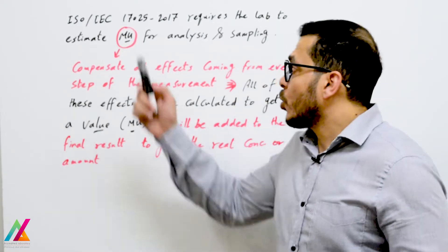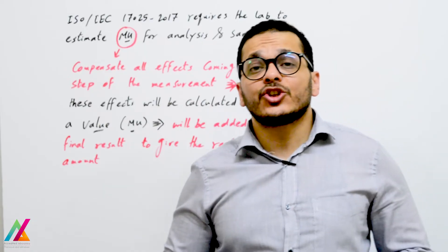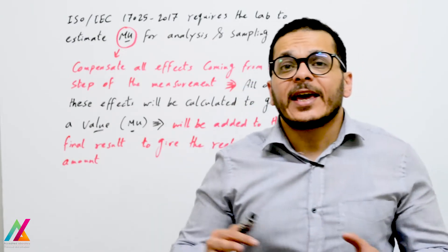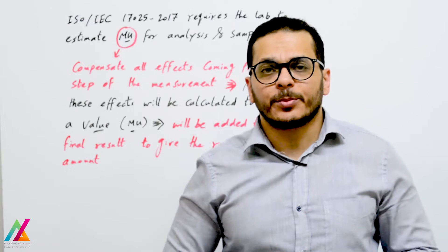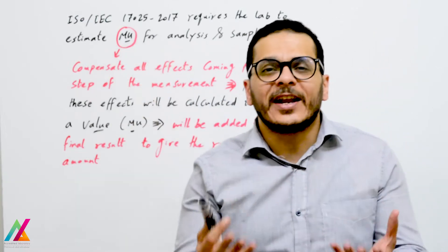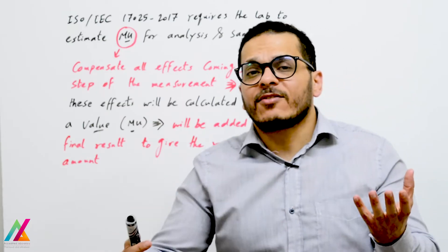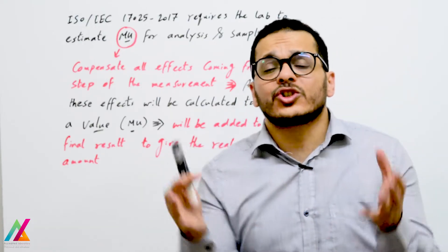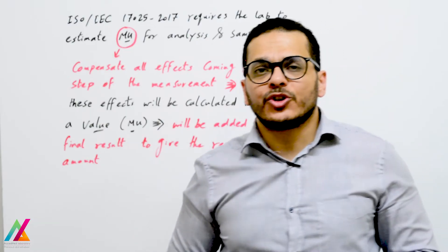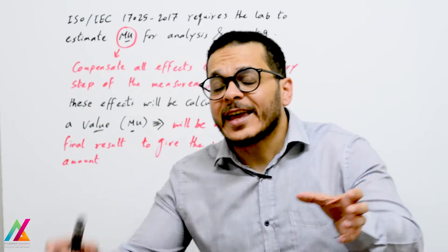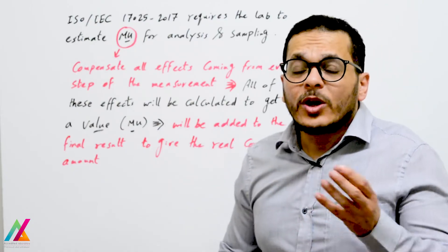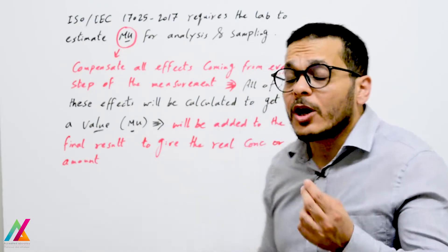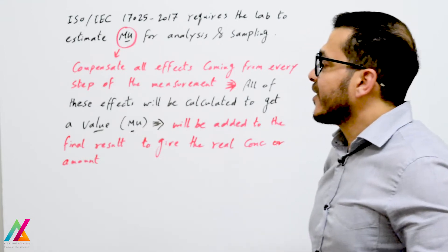Whether for microbiology, chemistry, or any other type of analysis, ISO/IEC 17025:2017 requires the lab to estimate measurement uncertainty for analysis and for sampling — for the whole measurement process. Measurement uncertainty is a value that is added to the final result for each sample to compensate for all sources of errors coming from every step of the measurement process, from sampling up to giving the result.